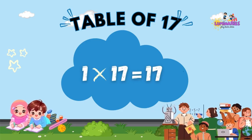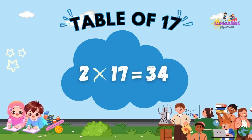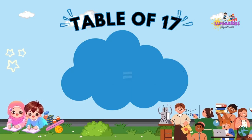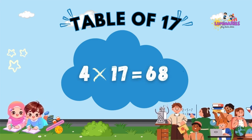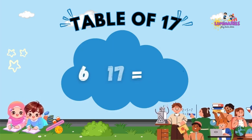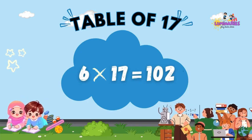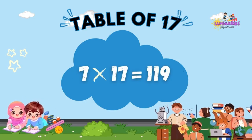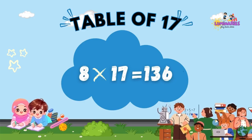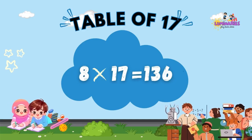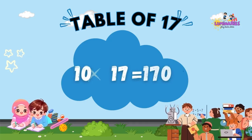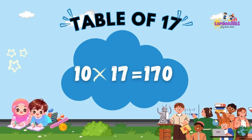Table of 17. 1 x 17 is 17. 2 x 17 is 34. 3 x 17 is 51. 4 x 17 is 68. 5 x 17 is 85. 6 x 17 is 102. 7 x 17 is 119. 8 x 17 is 136. 9 x 17 is 153. 10 x 17 is 170.